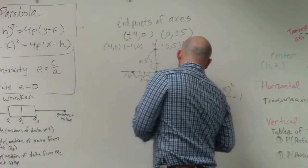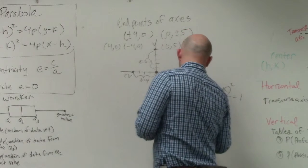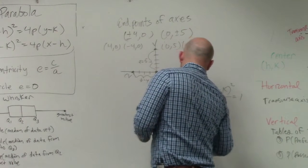So x minus 0 squared over b, which is 4 squared.